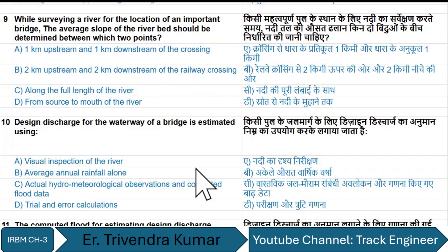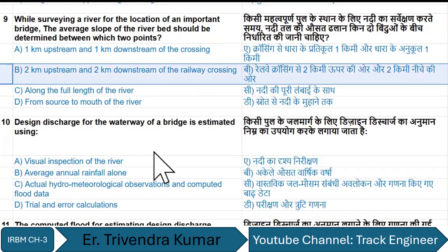While surveying a river for the location of an important bridge, the average slope of the river bed should be determined between two points — 2 kilometers upstream and 2 kilometers downstream of the crossing.